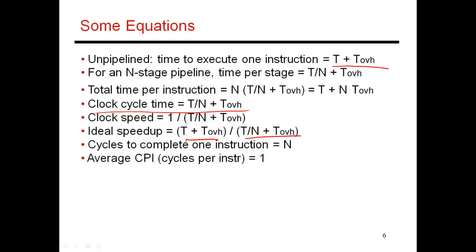As a result of pipelining, each instruction takes n cycles to complete because it passes through n stages. But on average, one instruction leaves the processor every single cycle. If you looked at the processor for a million cycles, nearly a million instructions would leave the pipeline. So the average number of cycles per instruction — the CPI — is one. Note the distinction: one instruction takes n cycles to finish, but on average there is one instruction graduating every cycle. In the next video, I'll walk through a simple five-stage pipeline.